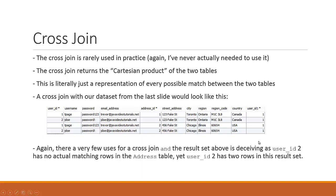Now let's talk about the third major type of join, which is the cross join — which is what I said I've never used before. The cross join is rarely used in practice; I've never needed to use it. The cross join returns something called the Cartesian product of the two tables, which is literally just a representation of every single possible match between the two tables.